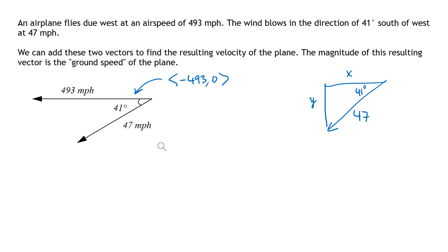And with a little bit of trigonometry, SOHCAHTOA, what I can see here is that the cosine of that 41 degrees is adjacent over hypotenuse, x over 47. And the sine of 41 degrees, that's the opposite over hypotenuse, which is y over 47.